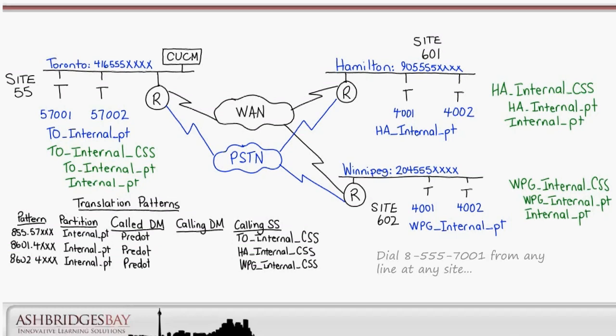We've configured translation patterns to call between sites using 8 as an access code. For example, if we dial 855-57001 from any line at any site, we will match the pattern 855.57XXX in the internal partition. This pattern then gets translated to the number 57001, which we look for in the Toronto internal calling search space and find in the Toronto internal partition. The other sites have similar translation patterns.